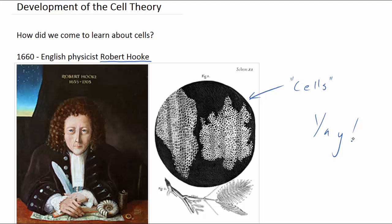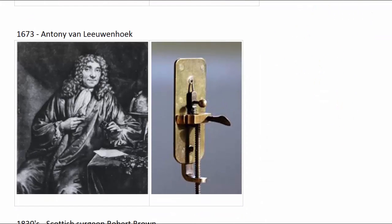Although he did not realize the significance of his observation, he was the first person to see the outlines of cells and initiated a new field of science called cell biology. In 1673, Antoine van Leeuwenhoek of Holland improved lenses further. He used only a single lens but produced a clearer and more highly magnified image than most two-lens microscopes then available.